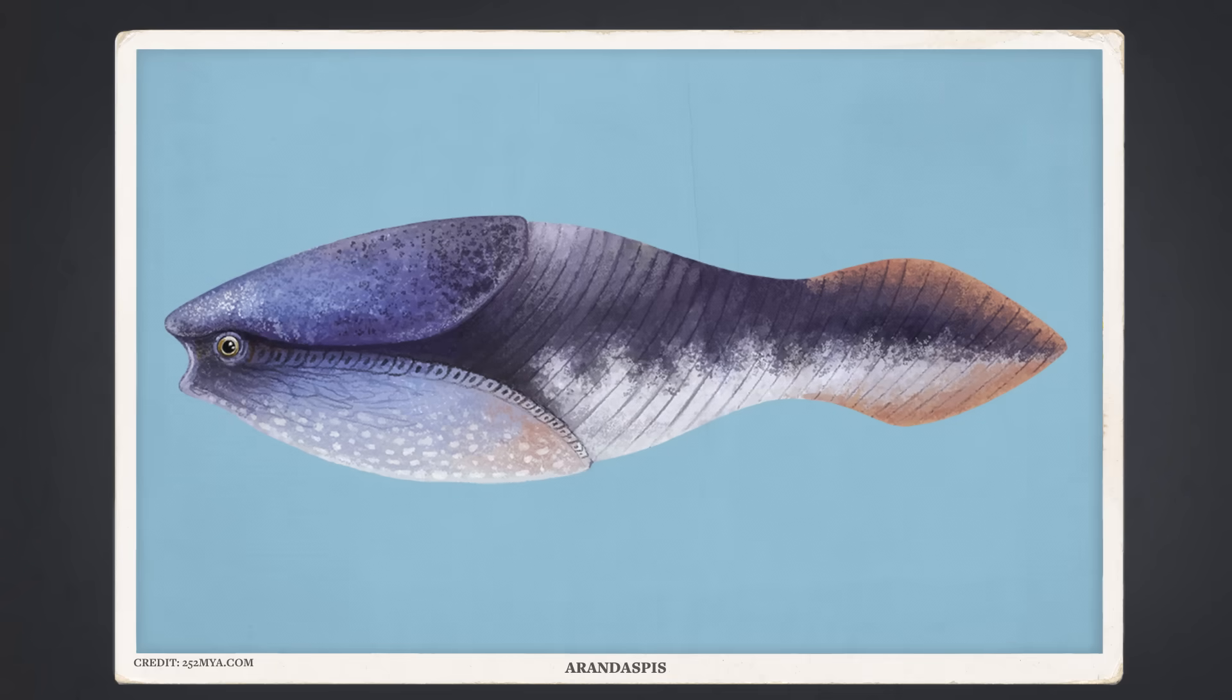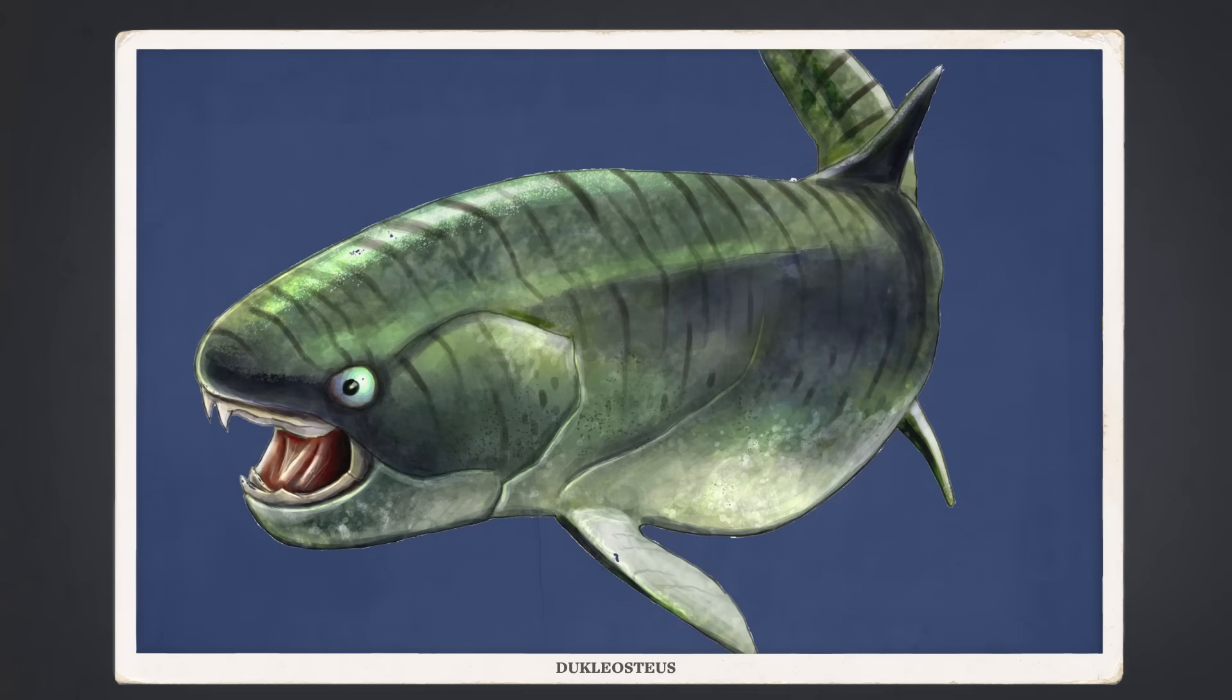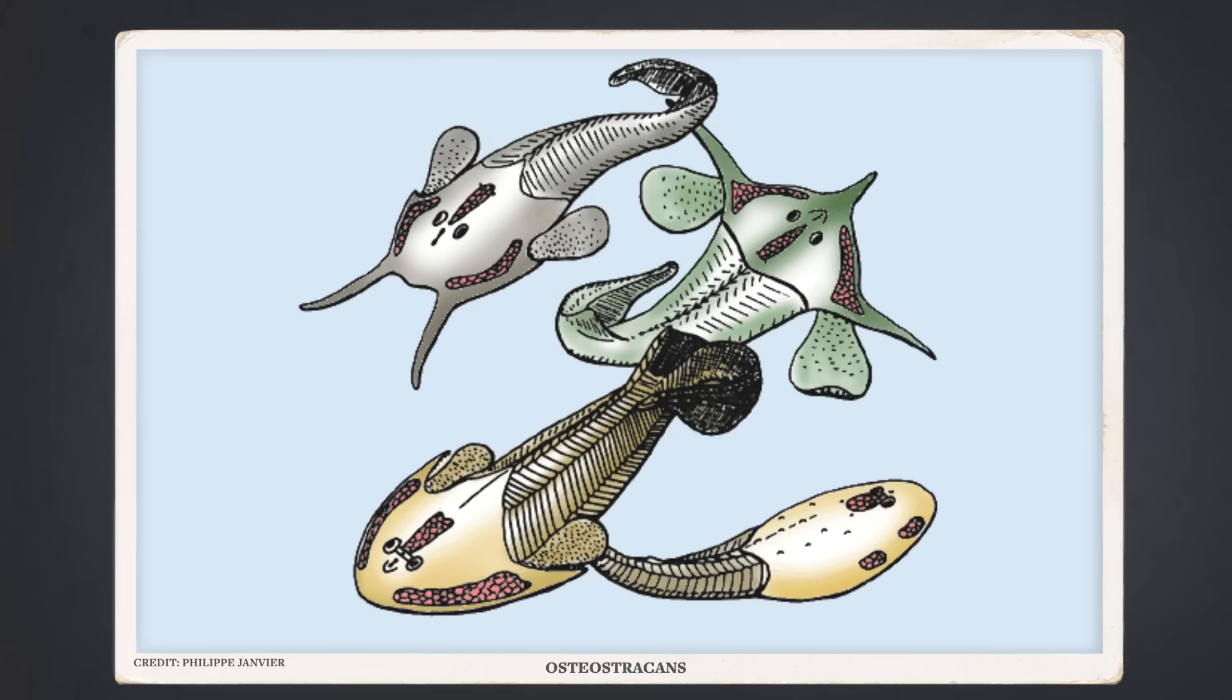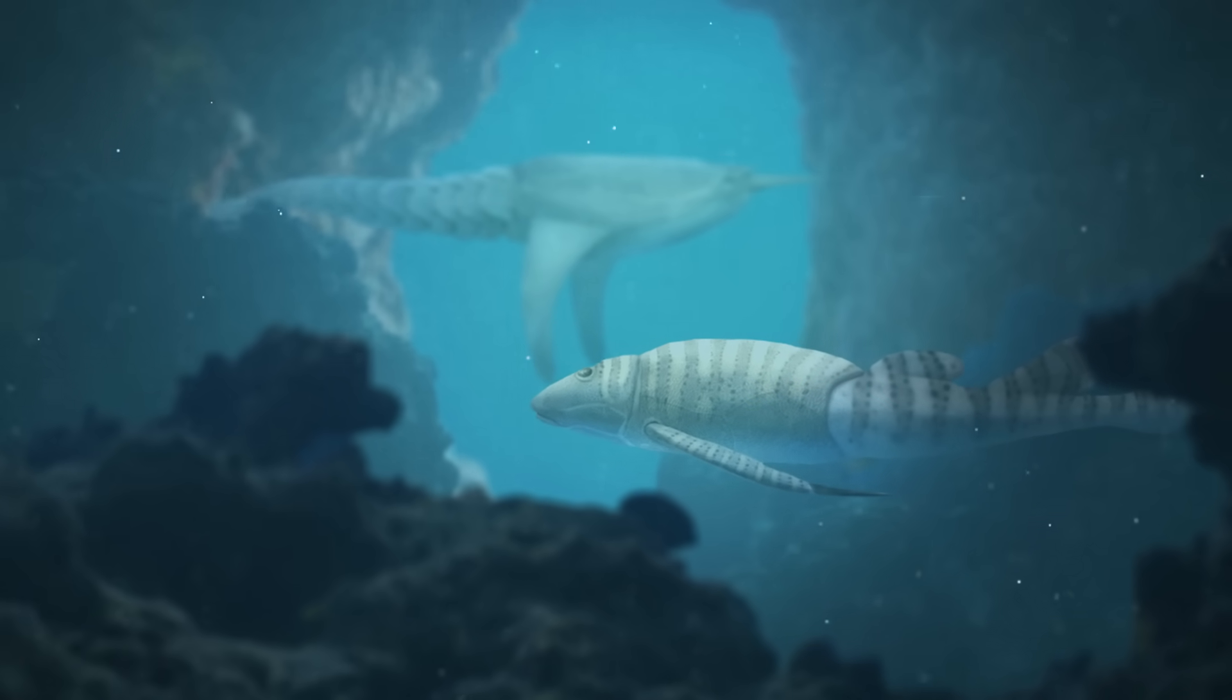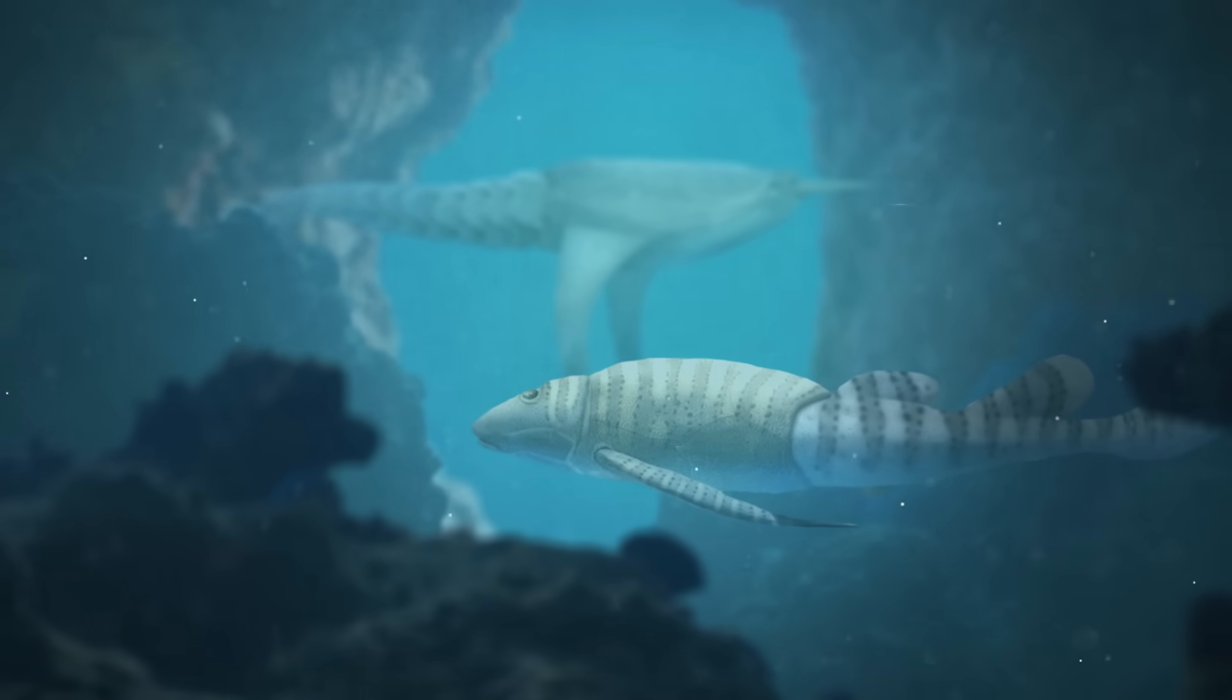But the fish that the Devonian is perhaps best known for were a little different than the ones you and I know today. Back then, some fish were more medieval. They wore armor, sometimes made of big plates and sometimes made of interlocking scales. And the evolution of armor may seem like an obvious adaptation for protection, especially in the Devonian's crowded seas. But that armor may have served a totally different purpose, one many animals still use today, including you and me.